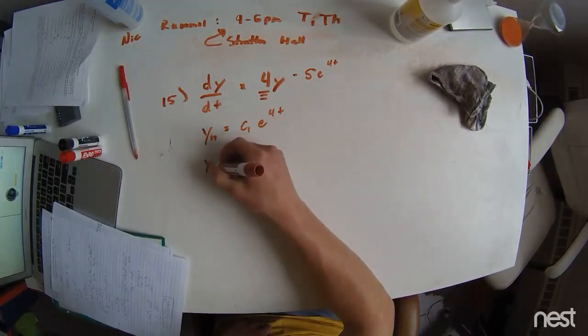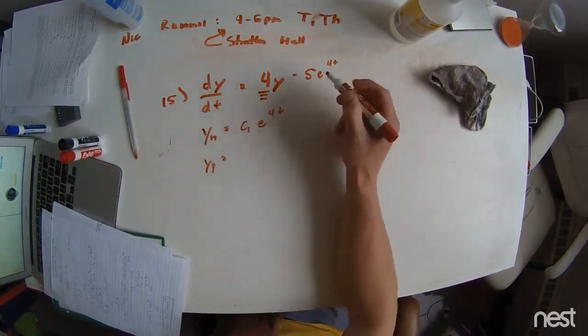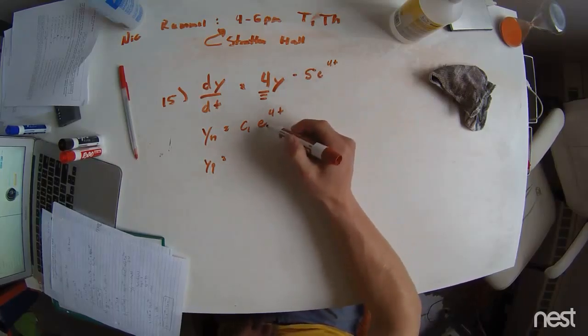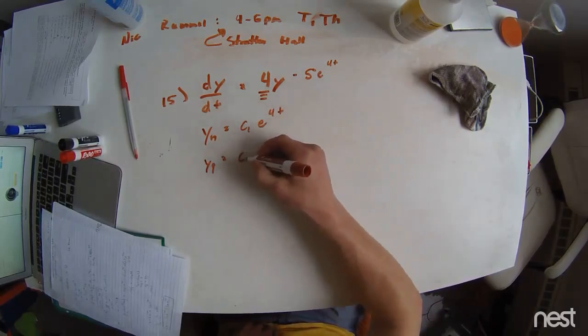Next, we're going to be solving for the y particular case. We notice that we're going to guess something with e to the 4t up here. Because we've already guessed that in the homogeneous, we have to come up with a new guess.